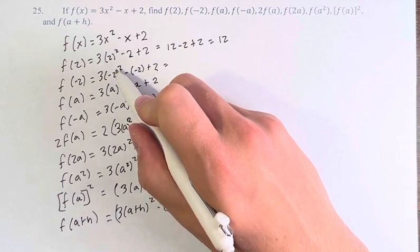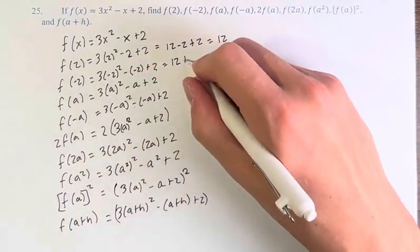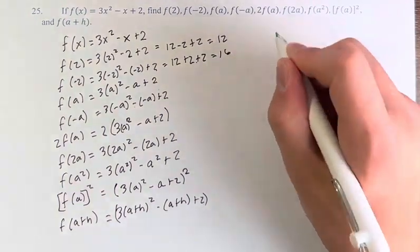negative 2 squared is 4 times 3, so that's 12, minus negative 2 is plus 2, and then plus 2 at the end, this is 16.